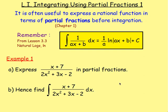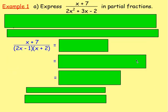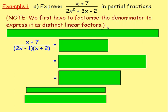Example 1, part a: express (x + 7) over (2x² + 3x − 2) in partial fractions, and hence integrate that. To express this in partial fractions, the first thing we need to do is factorise the denominator — we need the denominator expressed as distinct linear factors.